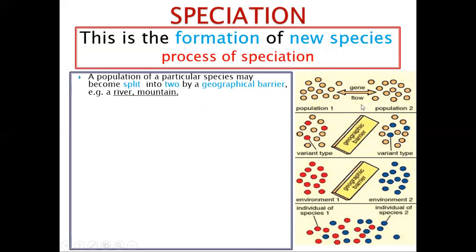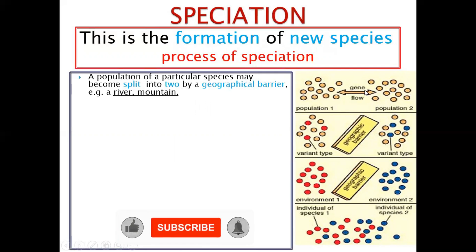So we are saying that a population of a particular species may be split into two by a geographical barrier. It was one population. There is gene flow, which means that they can interbreed — they can meet.